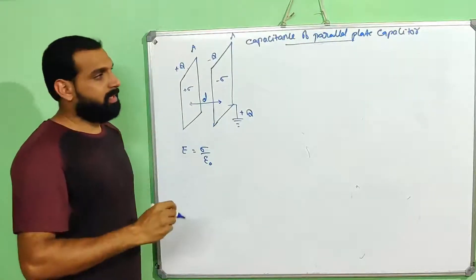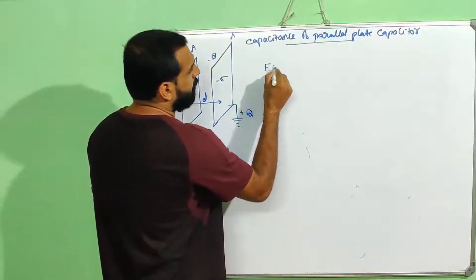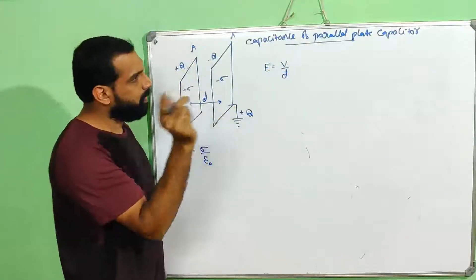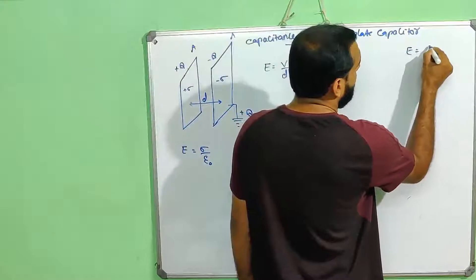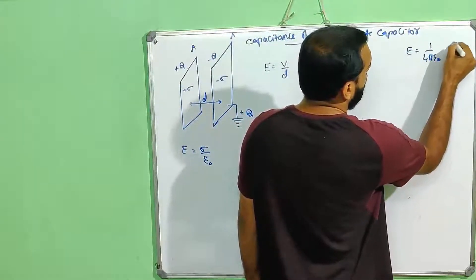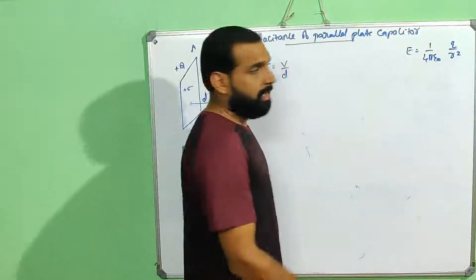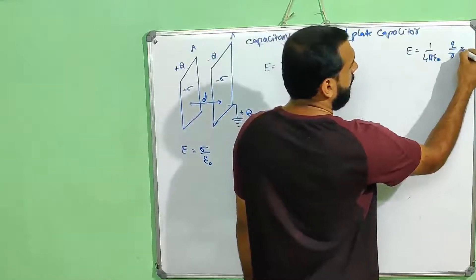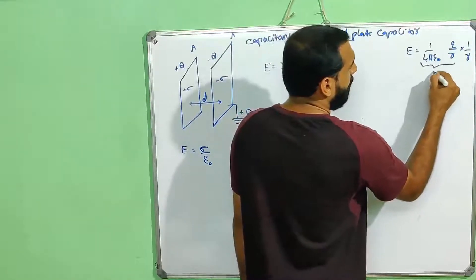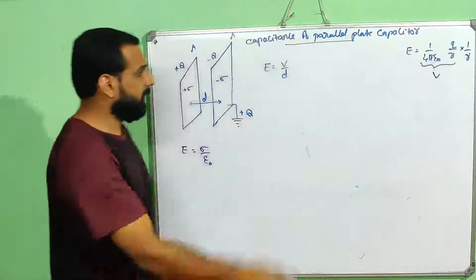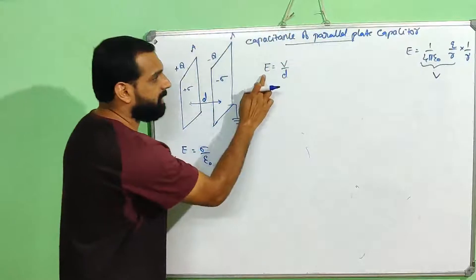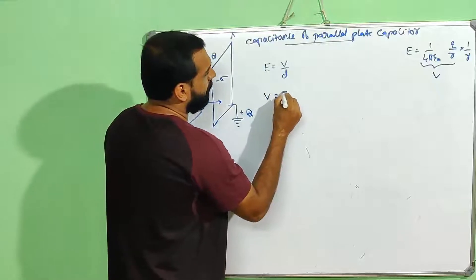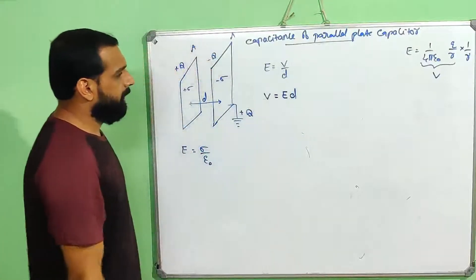Now we are finding the electric field and potential in the region. E is equal to V by d. The electric field equals sigma by epsilon 0. The potential is given by 1 by 4 pi epsilon 0 into q by r. E is equal to V by d, so V is equal to E into d.